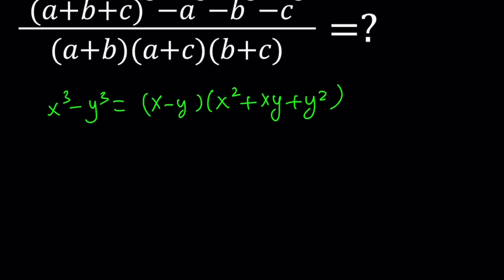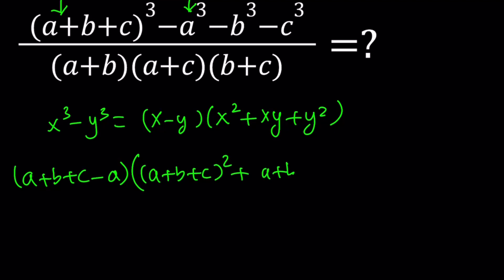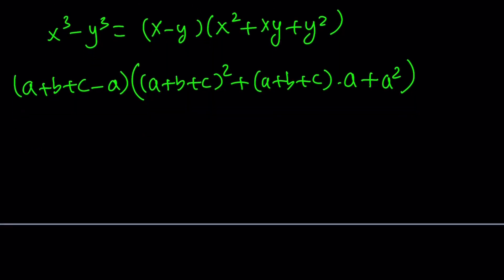Using that formula, we can go ahead and write this as a plus b plus c minus a — first we subtract the terms — and then that is multiplied by x squared plus x times y, which is a plus b plus c, times a plus y squared, which is a squared. Here a cancels out, and we end up with b plus c.